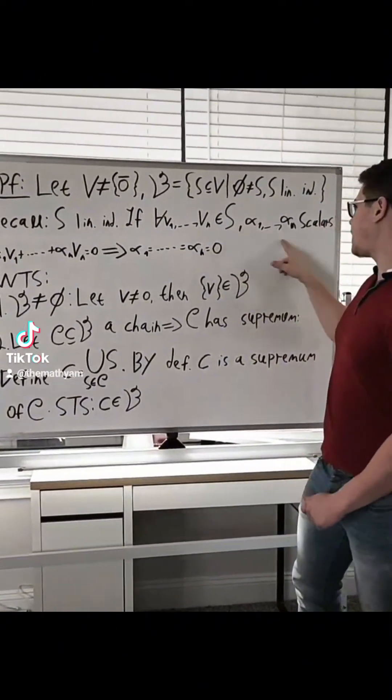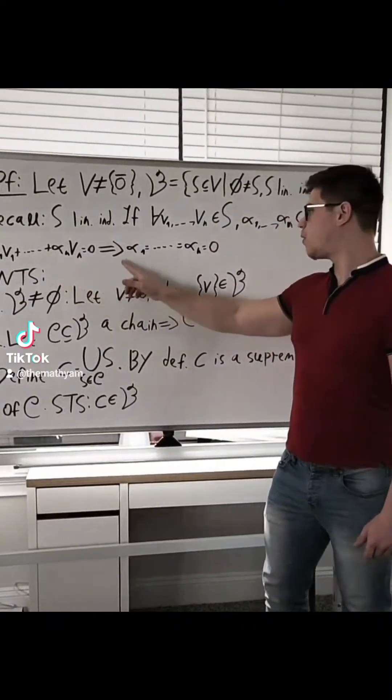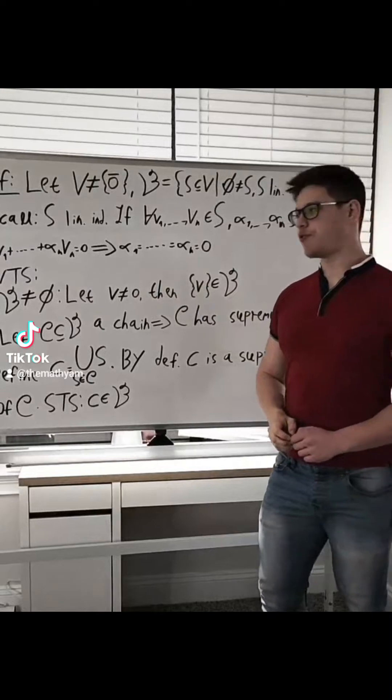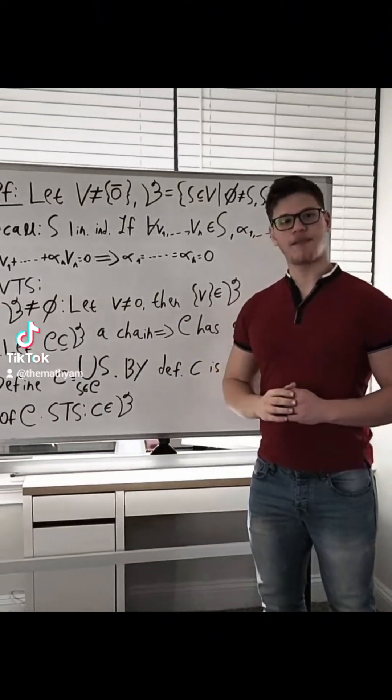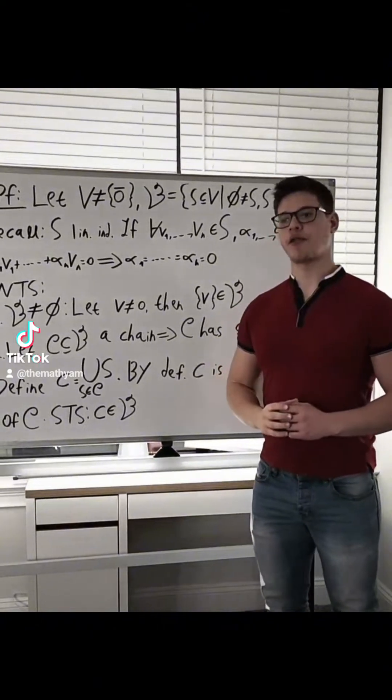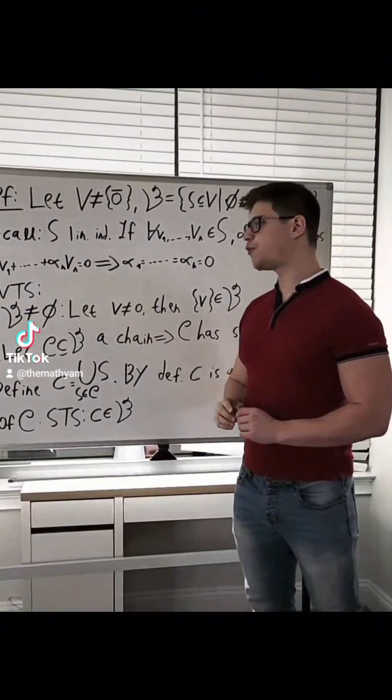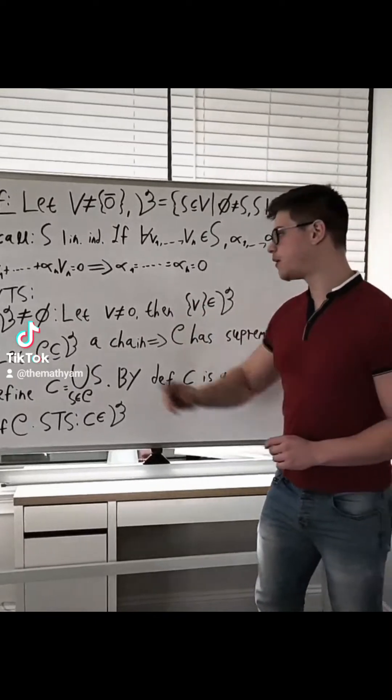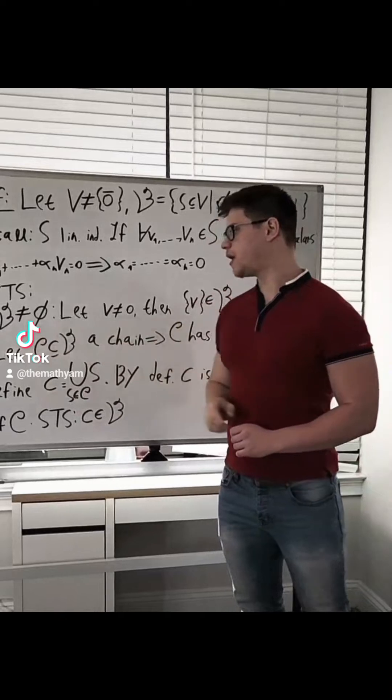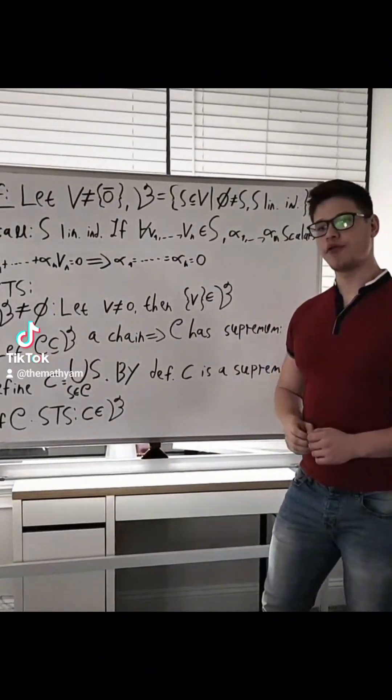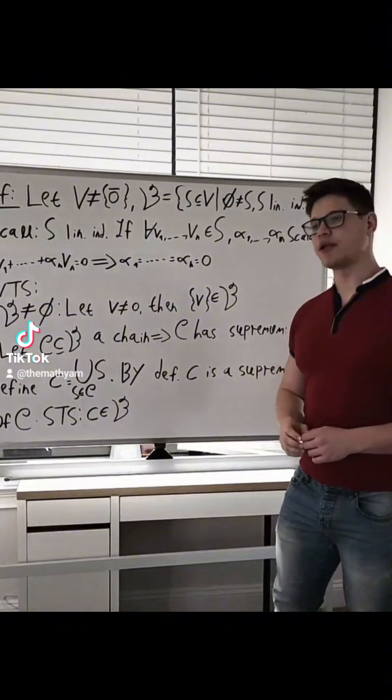In other words, if we take any scalars and we get this type of equation, then all of the scalars are actually equal to zero. This also coincides with the definition of linear independence for finite sets, which you might know from linear algebra. So we want to show two things so that we can use Zorn's Lemma. The first is that we want to show that B is non-empty, but this is true because every non-zero vector is a linearly independent set.